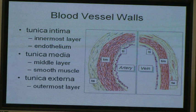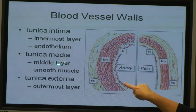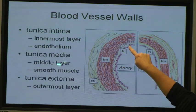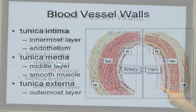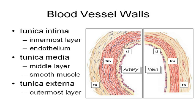Another difference between arteries and veins: notice that the tunica intima is ruffled in an artery but not in a vein. It's a blood pressure thing. In an artery, you feel that pulse, and the ruffles allow the artery to expand and contract as the pulse goes from systolic to diastolic pressure. If you didn't have ruffles in that endothelium, it would rip and rupture. It's like an elastic waistband.